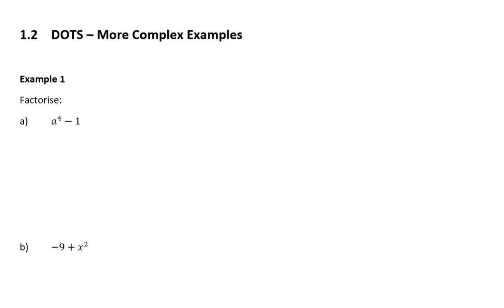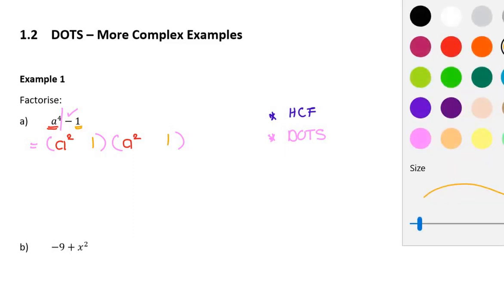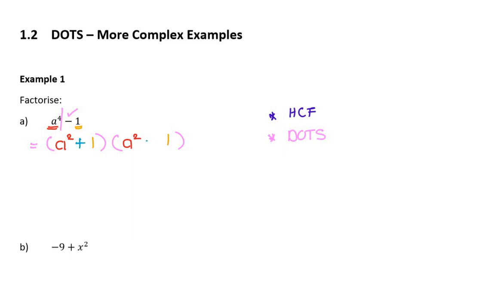Example one says factorize. Part a is x to the power of four minus one. The first thing I always do when I factorize anything — which most people forget — is check for highest common factor. There are two terms, x to the power of four and one, and they have nothing in common. So now I look for DOTS: is there a difference? Yes. Are there two terms? Yes. Are they both perfect squares? Yes. So I factorize: x squared times x squared gives x to the power of four, and one times one gives one — one with a plus sign and one with a minus sign.